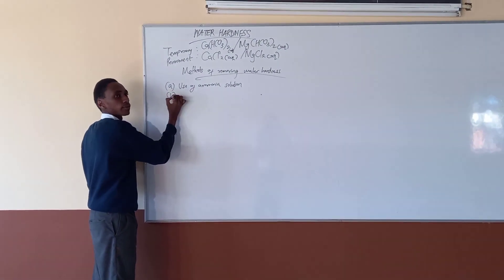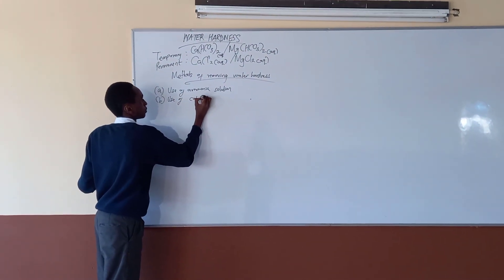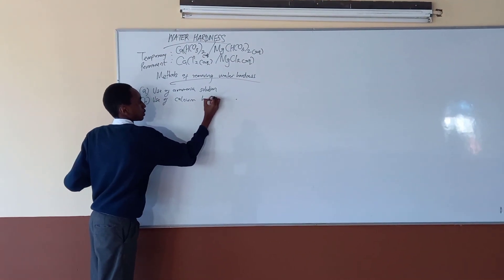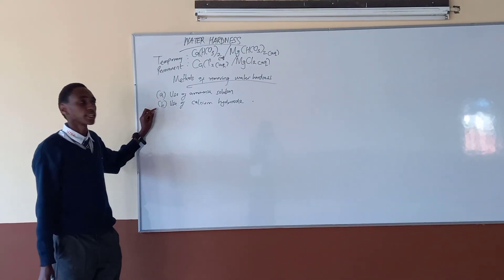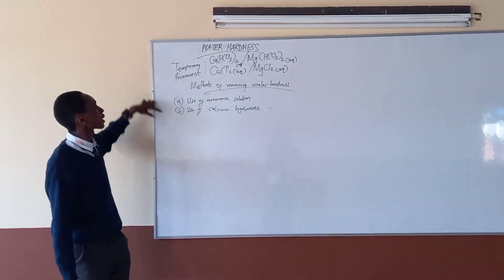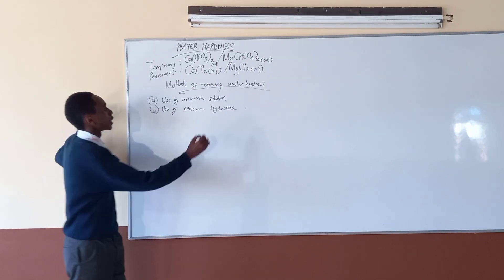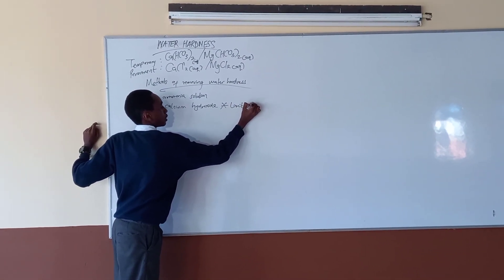Part B, we have use of calcium hydroxide. Note, ammonia solution has to be taken out by using calcium hydroxide, because if it still exists, we are going to bring back water hardness. So this should be noted that it has to be limited.